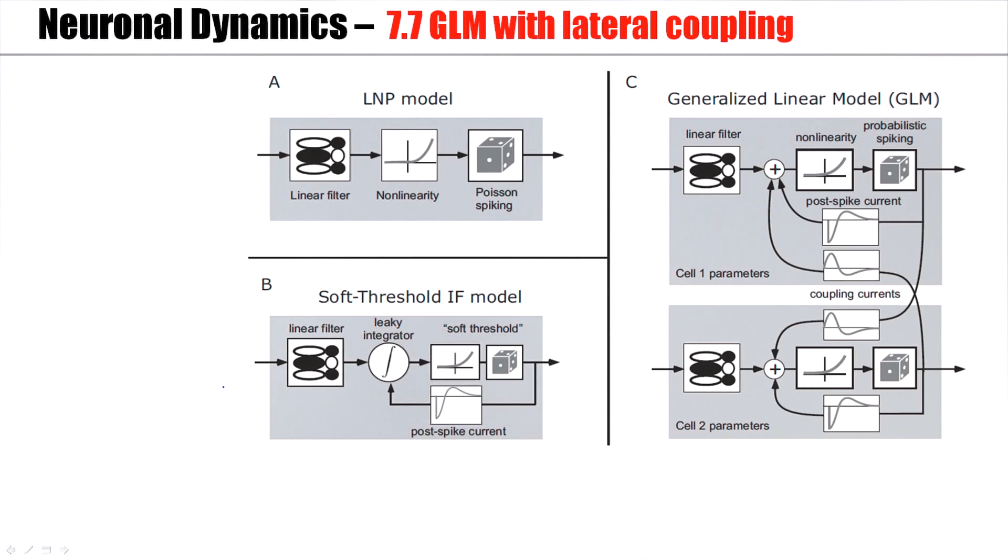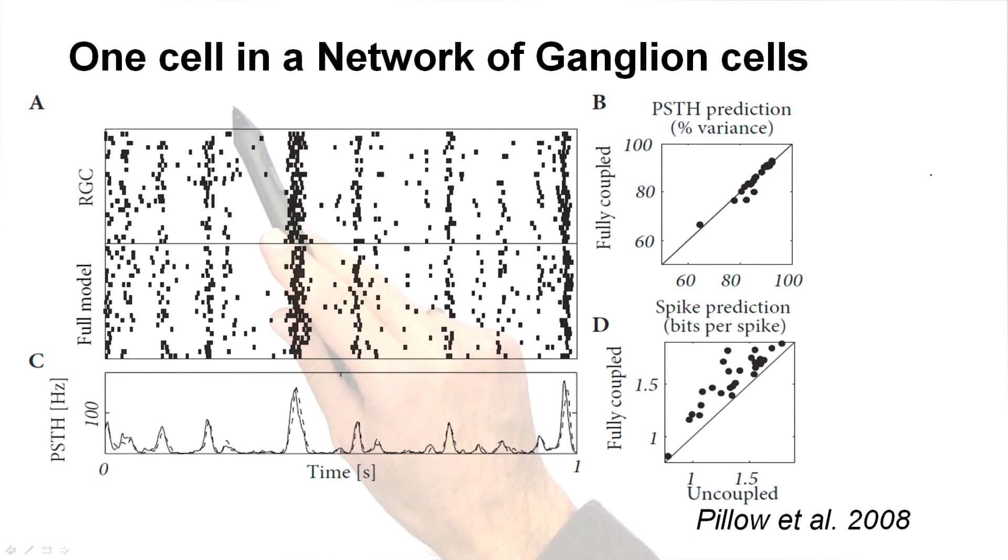Now, a retinal ganglion cell, one of these models, will talk to other retinal ganglion cells nearby. So, an even better model would be a network of GLMs, coupled GLMs. And if you study, again, a single cell, but now part of a network, and you've also recorded the other cells, you have optimized the parameters of the other cells, then this fully coupled network is even better in the PSTH prediction and the spike prediction than the uncoupled model.